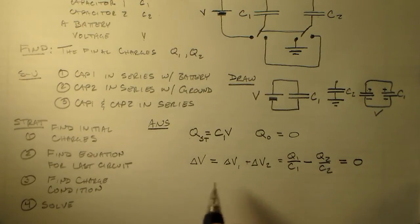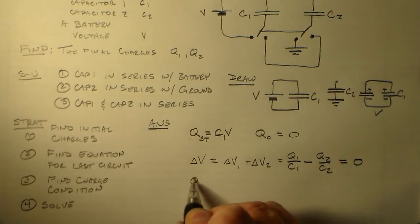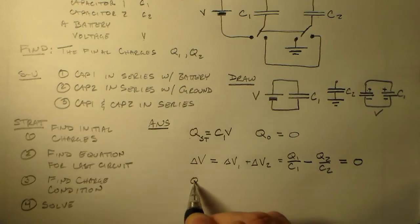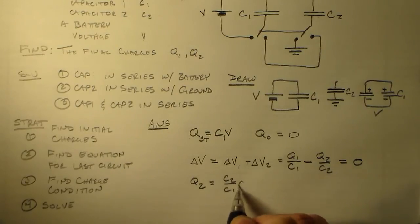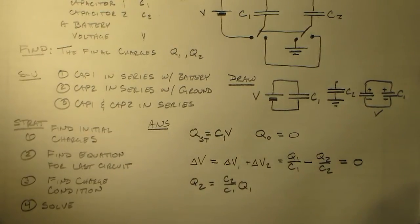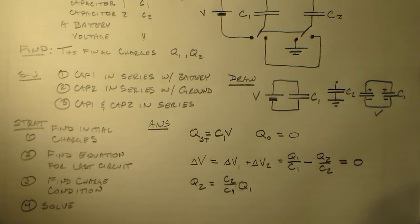That has an implication. That implication means that Q2 is equal to C2 over C1 times Q1. The more capacitance you have, the more charge you're going to end up having when you divvy it up. So we're going to divvy it up between these two different plates.